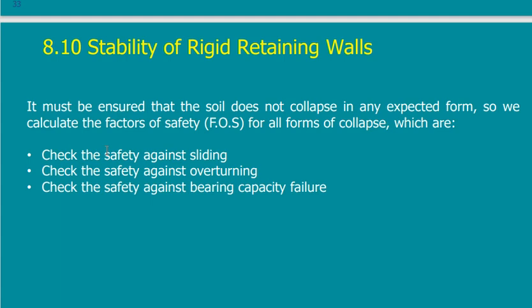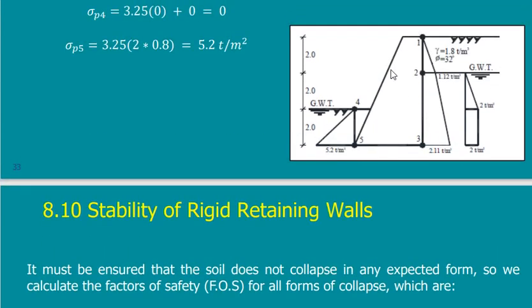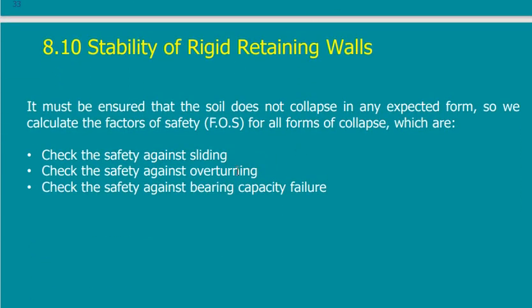The factor of safety is sometimes 2, 2.5, or 3 — a very big factor of safety that can cover ignored items. What are we going to check for the case of the retaining wall? It is a rigid retaining wall, because a flexible retaining wall has a different approach. We have to study the safety against sliding, the safety against overturning, and the safety against bearing capacity failure.